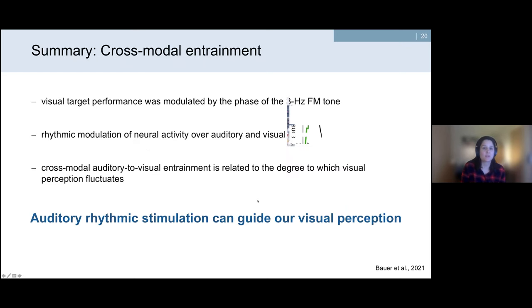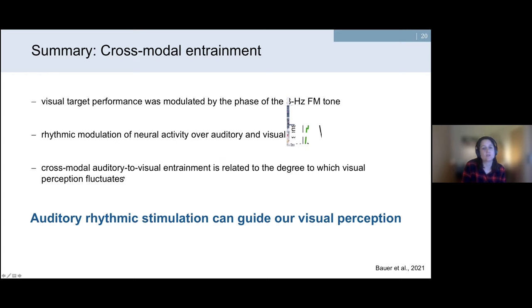To sum up the second part: visual target performance was modulated by the phase of the 3 Hz frequency-modulated tone. Neural activity modulation was seen across auditory but more importantly also across visual electrodes, and this cross-modal auditory-to-visual entrainment was related to the degree to which visual perception fluctuated. We concluded that auditory rhythmic stimulation can guide not only auditory but also visual perception, working across the senses.